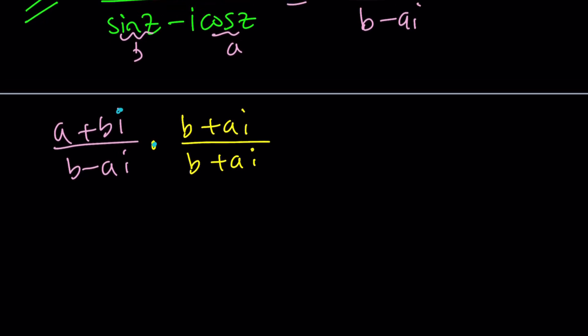We're going to distribute in the numerator: AB plus A squared I plus B squared I plus AB I squared. I squared is negative one, so that's just going to be minus AB. All of that is divided by, these two are conjugates, so their product is B squared plus A squared.